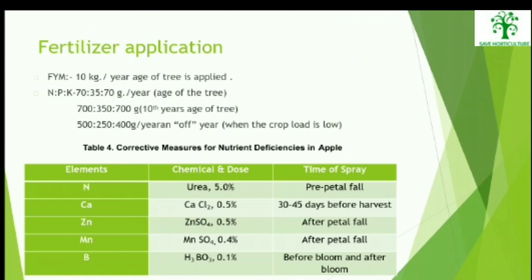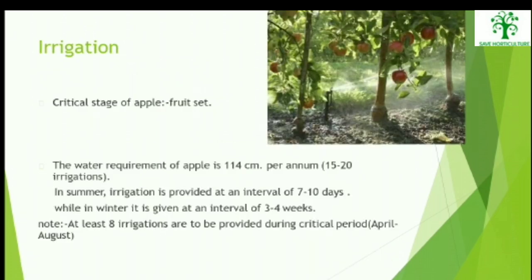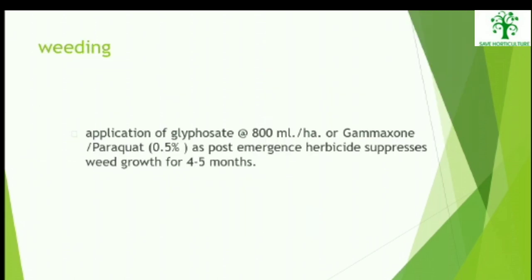Fertilizer application is required for healthy productivity of apple. Irrigation: The water requirement of apple is 114 cm per annum. In summer, irrigation is provided at an interval of 7–10 days, while in winter it is given at an interval of 3–4 weeks. At least 8 irrigations are to be provided during the critical period, which ranges between April to August.